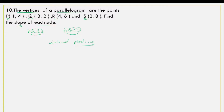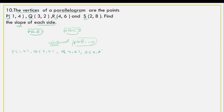Now for the next exercise, we have the quadrilateral PQRS. The coordinates are: P is (1, 4), Q is (3, 2), R is (4, 6), and S is (2, 8). We will check whether this is a parallelogram or rectangle by finding the slopes. The slope formula is M equals y2 minus y1 divided by x2 minus x1.